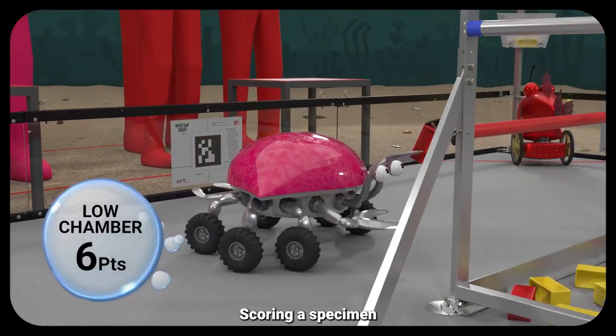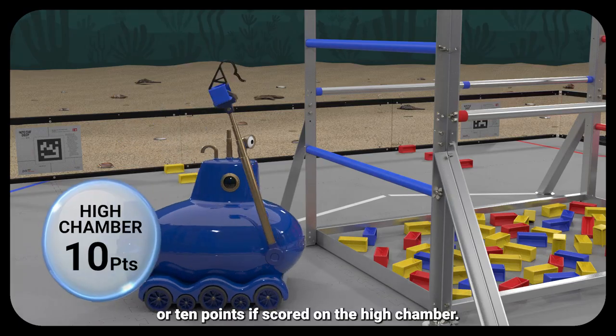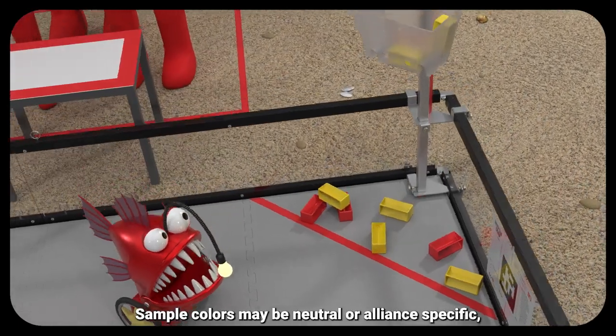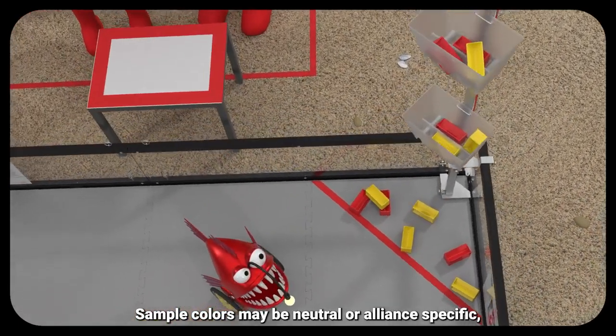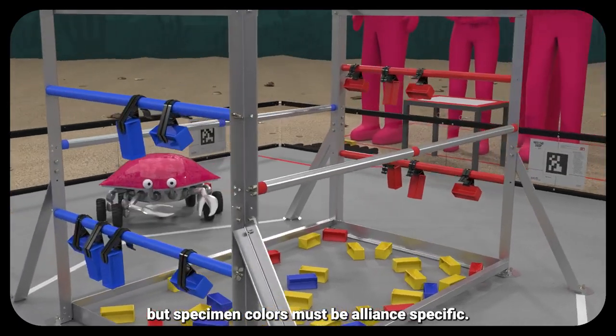Scoring a specimen on the low chamber earns 6 points, or 10 points if scored on the high chamber. Sample colors may be neutral or alliance-specific, but specimen colors must be alliance-specific.